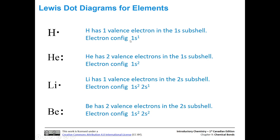For hydrogen, one dot on the Lewis dot diagram represents that one valence electron. Helium has electron configuration 1s², so it has two dots paired together. Lithium has one valence electron in the 2s subshell — the 1s² core electrons are not represented on the Lewis dot diagram, so lithium has one electron dot. Beryllium has two valence electrons in the 2s subshell, so it is shown with two dots.